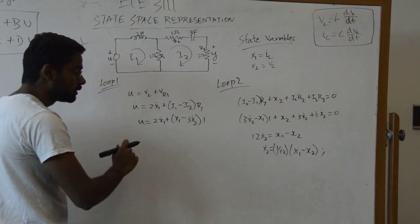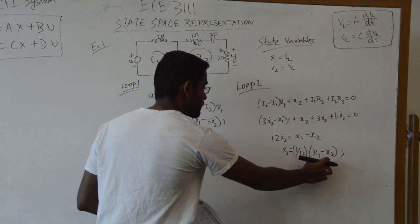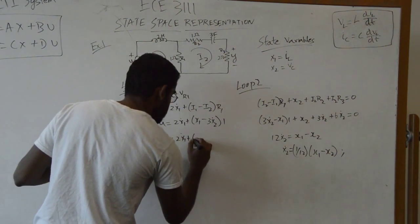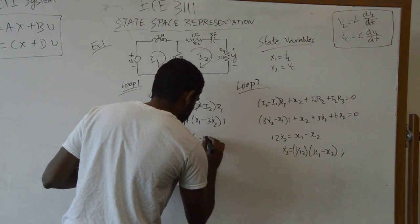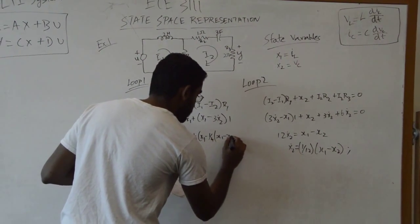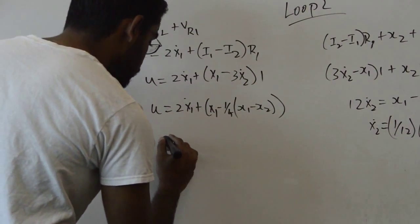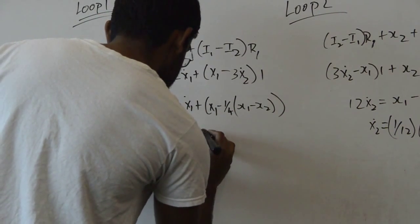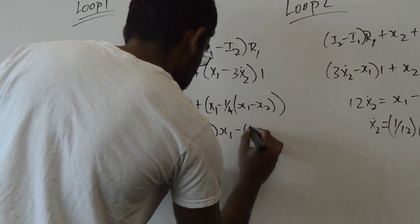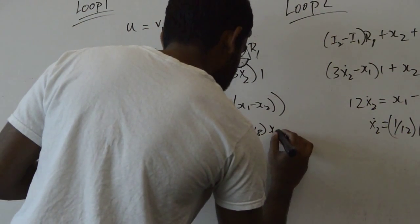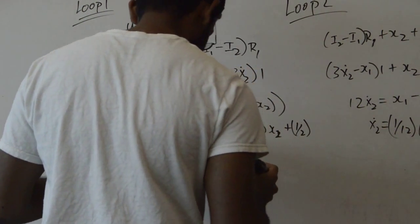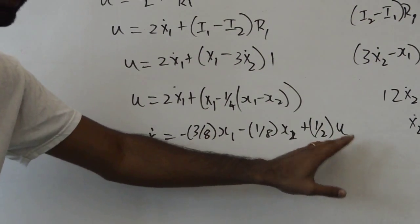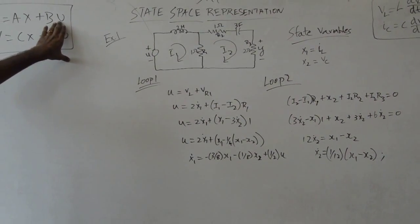Substituting x2-dot into loop 1 gives: 2 times x1-dot plus x1 minus (3 times 1/12)(x1 minus x2) equals U. Simplifying 3/12 to 1/4 and isolating x1-dot with simple algebra yields: x1-dot equals (1/2)x2 minus (3/8)x1 minus (1/8)x2 plus (1/2)u.